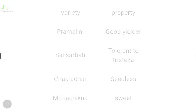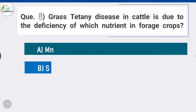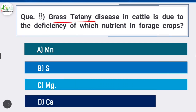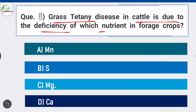Question 8: Grass tetany disease in cattle is due to the deficiency of which nutrient in forage crops? Option C is correct: magnesium. Grass tetany is a metabolic disease in cattle that happens due to deficiency of magnesium. It can occur in livestock such as beef cattle, dairy cattle, and sheep, usually after grazing of rapidly growing grasses especially in early spring.